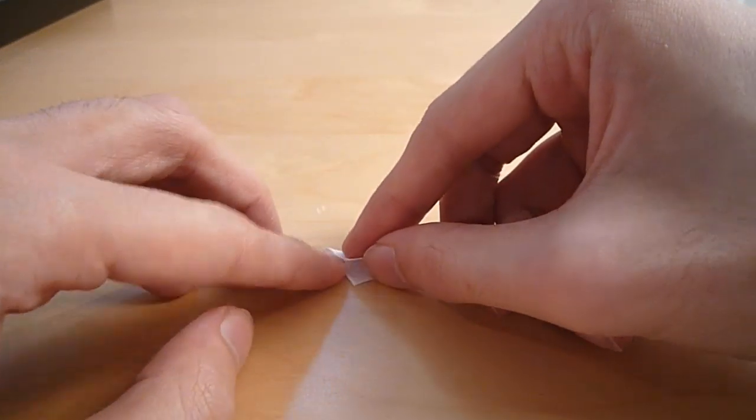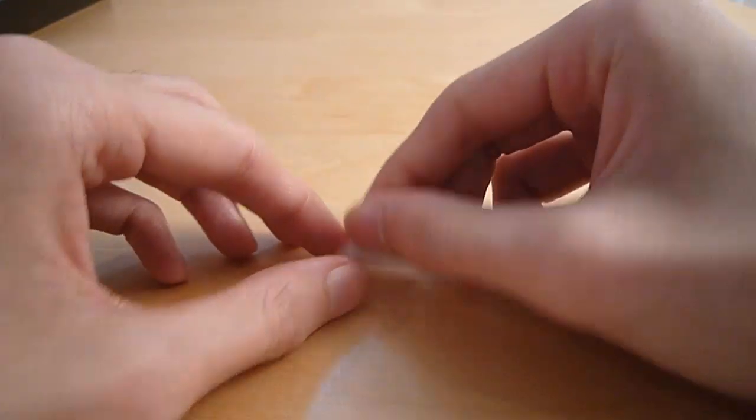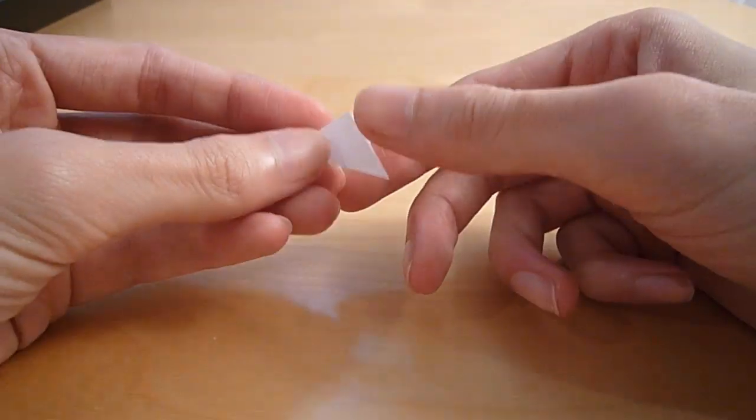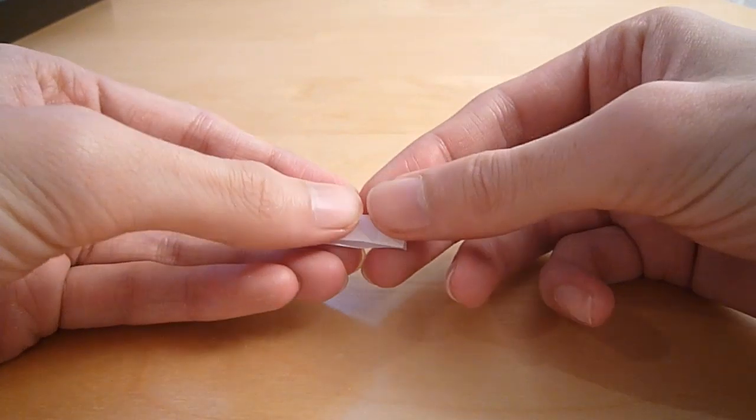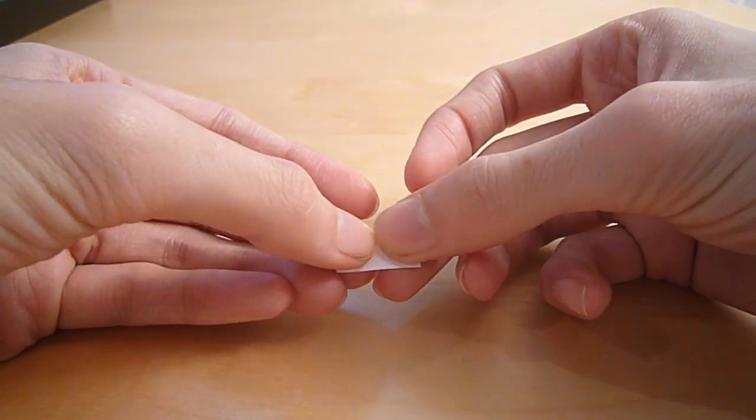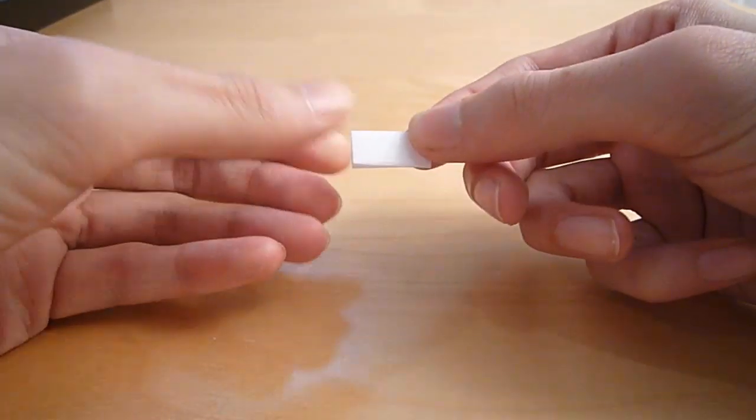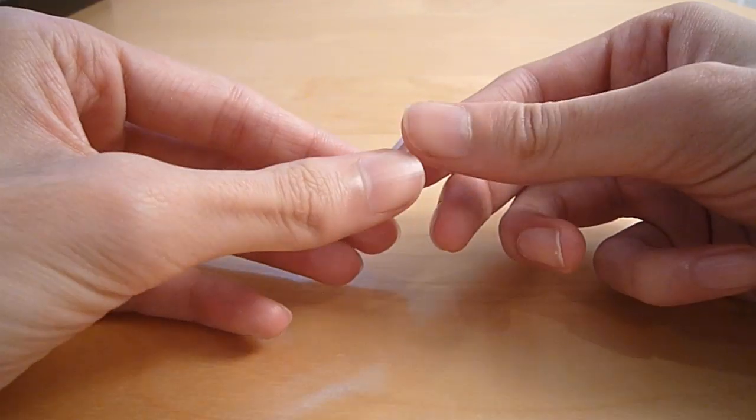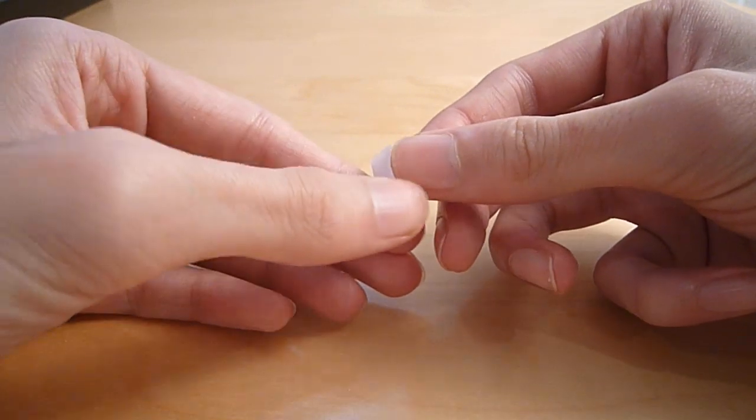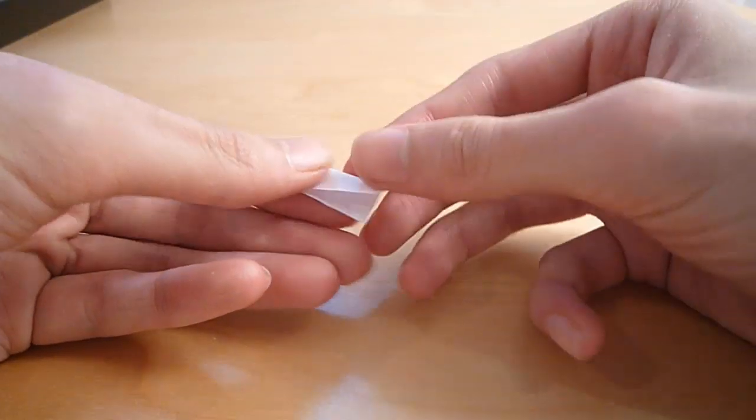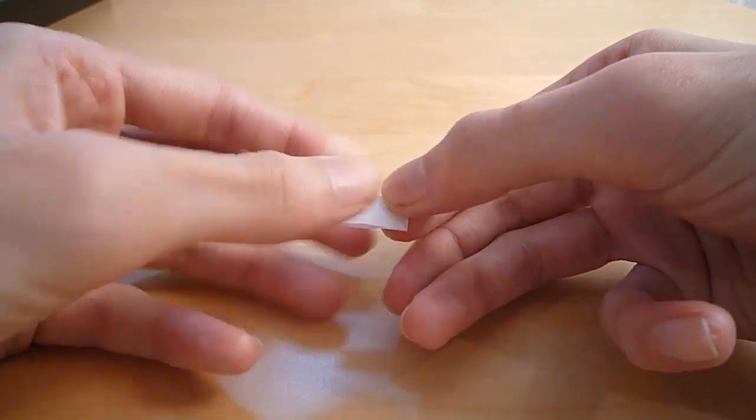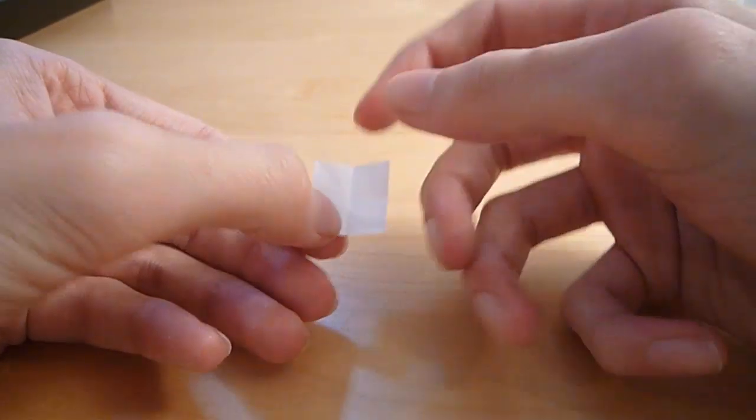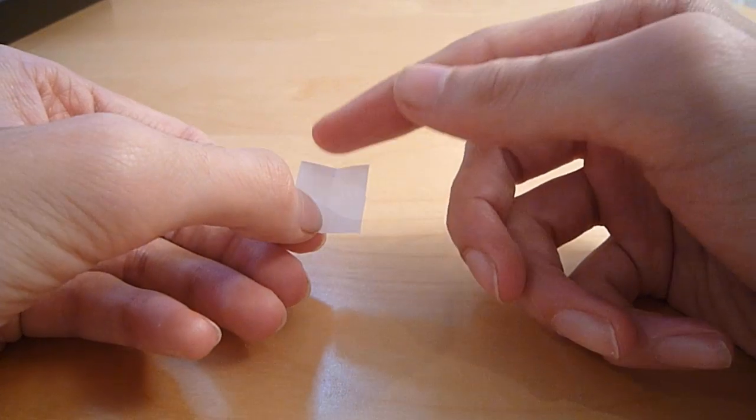First thing we need to do is fold on a diagonal. As you can see, it makes a triangle, very nice. Unfold. Now you want to fold it in half horizontally and vertically. You'll see why in a moment. There you go. That's one fold.